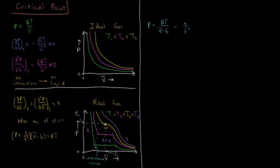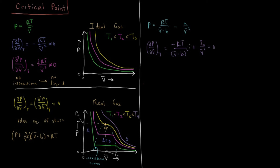We want to find the first derivative with respect to molar volume. Differentiating the van der Waals pressure equation with respect to molar volume we get: minus RT over (V-bar minus B) squared plus 2A over V-bar cubed equals zero. That's our first equation to solve if we want to find the critical point in terms of A and B.